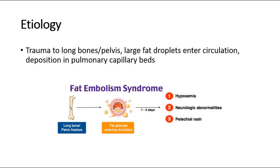For the etiology of fat embolism, it occurs due to trauma to long bones or pelvis. Large fat droplets will enter the blood circulation and later be deposited in pulmonary capillary beds, known as fat embolism, causing several signs and symptoms.